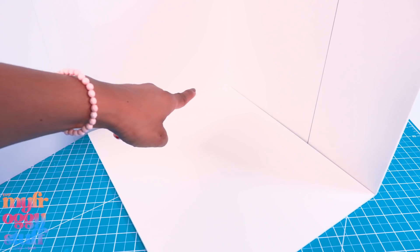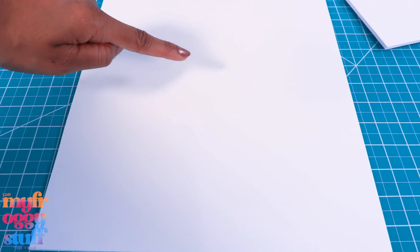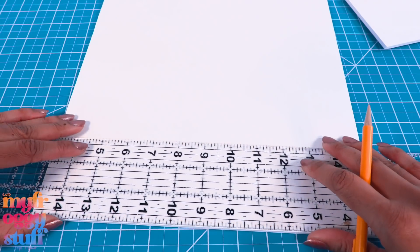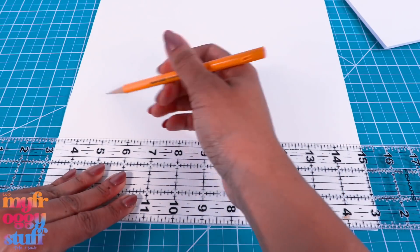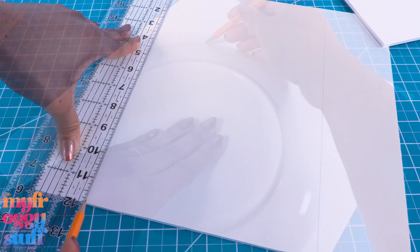I cut another piece of foam board that is 13 by a little under 12 inches. Let's draw a 3 inch line at the bottom and a 2 inch line at the top. I'm tracing a plate to make a circle.